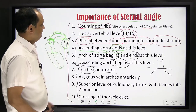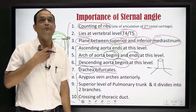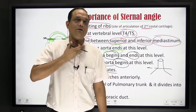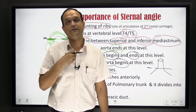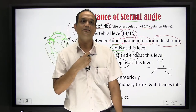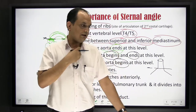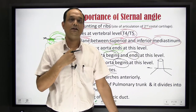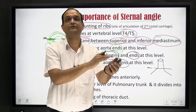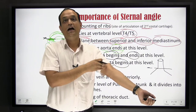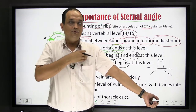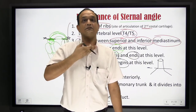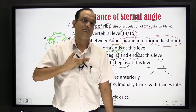There is one more important thing: whenever we talk about dermatomes here, the dermatome above the external angle is C2 and C3 — that is the area supplied by the cervical nerves. After that, the brachial plexus is formed: C2-C3 supply here, C4, C5, C6, C7, C8, and T1 go to the upper limb, and after T1 comes T2. So the sternal angle is a junction between the cervical and thoracic dermatomes.